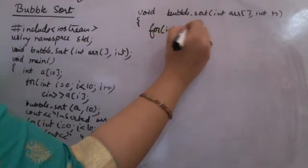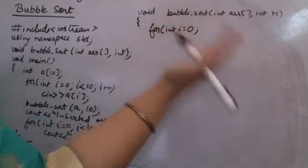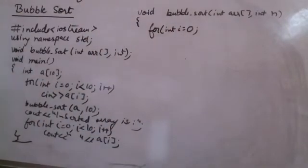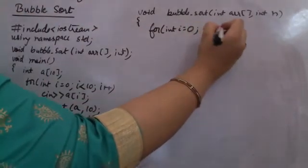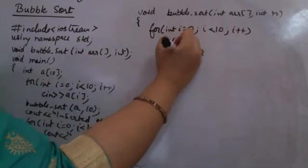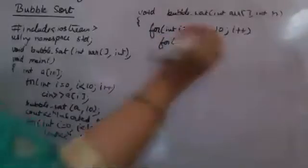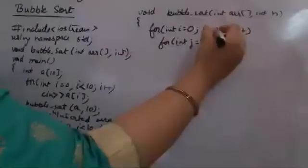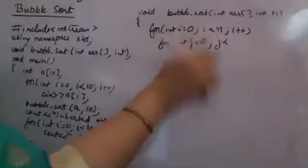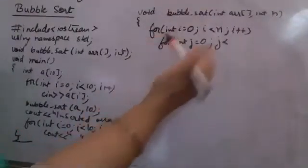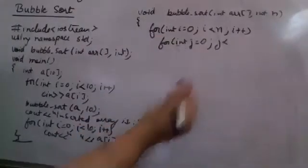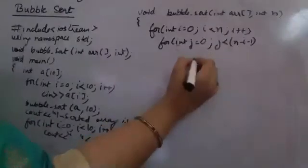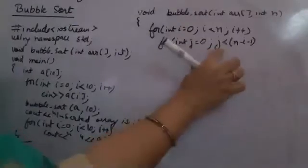The outer loop runs: for integer i = 0; i < size; i++. The inner loop runs: for integer j = 0; j < n - i - 1; j++. The reason for n minus i minus 1 is that with 10 elements I need to run the loop from index 0 to 8, because I'm always comparing j and j+1 — so the loop must run n minus 1 times to avoid going out of bounds.